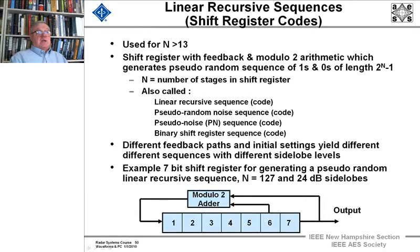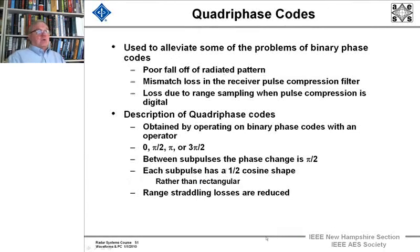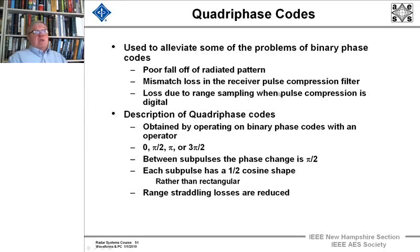The different feedback paths and initial settings yield different sequences with different side lobe levels. A 7-bit shift register for generating a pseudorandom linear recursive sequence with n equals 127 will give you 24 bits. You can have quadraphase codes where you don't shift plus 0 or pi but shift four phases — pi over 2 or 3 pi over 2. They're used to alleviate problems in binary phase codes like poor fall-off of the radiation pattern, mismatched losses in the pulse compression filter, and loss in range sampling. Between subpulse to subpulse you could have a phase change of pi over 2, and each pulse has a half cosine shape rather than a rectangular, so range straddling losses are reduced.